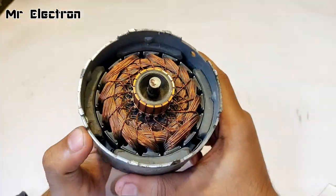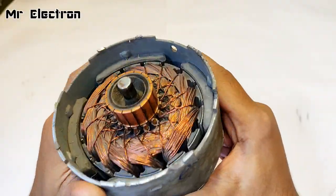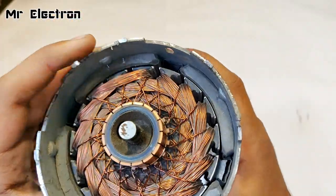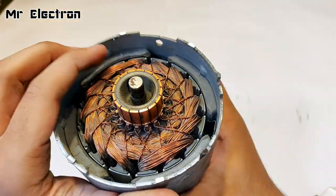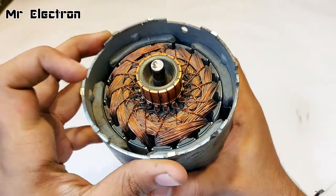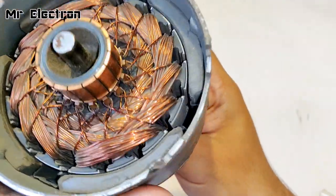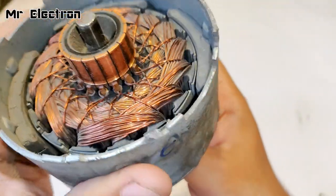That was the brush part. Now this is the rotor part. You can see there are four magnet poles: one, two, three, and four. Such thick wires have been used for creating the winding.